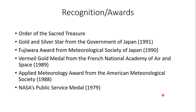Ted Fujita received numerous awards and recognition: the Order of the Sacred Treasure, Gold and Silver Star from the Government of Japan in 1991; the Fujiwara Award from the Meteorological Society of Japan in 1990; the Vermeil Gold Medal from the French National Academy of Air and Space in 1989; the Applied Meteorology Award from the American Meteorological Society in 1988; and NASA's Public Service Medal in 1979 — quite an amazing career.